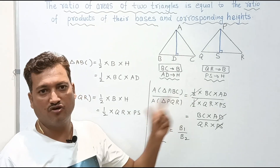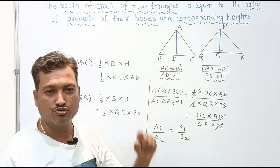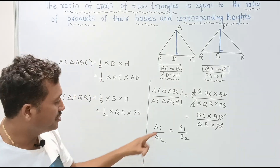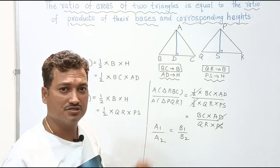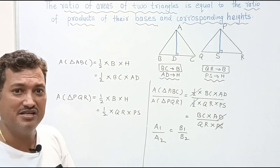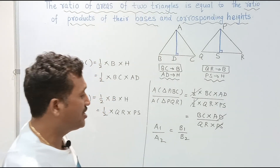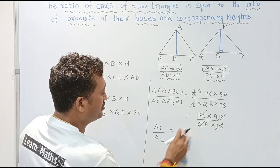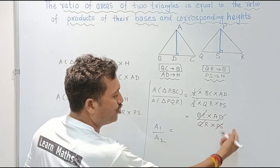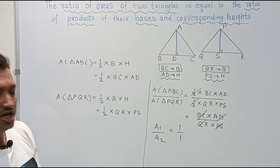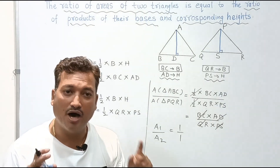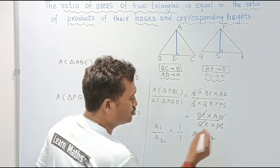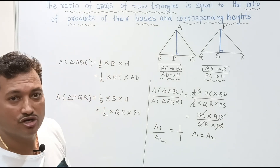So if the bases are equal, the ratio of areas equals the ratio of corresponding heights: A1/A2 = H1/H2. If the heights are equal, the ratio of areas equals the ratio of corresponding bases: A1/A2 = B1/B2. And if both the base and height are equal, everything cancels to give A1/A2 = 1/1, meaning the areas are equal: A1 equals A2. In total, we have four properties based on areas of two triangles.